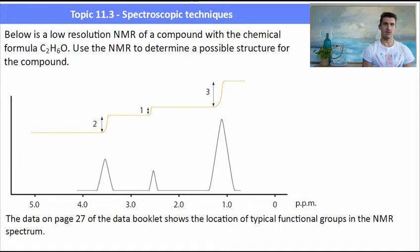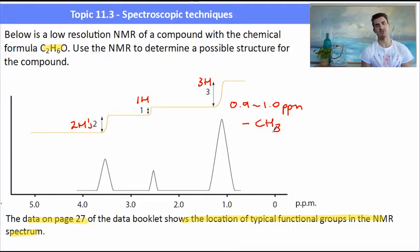Here we have a low resolution NMR with the chemical formula of C2H6O. We need to use the NMR to determine a possible structure. We use what we call the integrations, which tell us the areas, to work out how many protons are in each environment. To work out what these protons might be, we can use page 27 of the data book to have a look at the functional groups. So if you've got your data book there, you'll see that between 0.9 and 1 part per million, we generally find our CH3s. Now because this has three hydrogens, that's typical of a CH3 group.